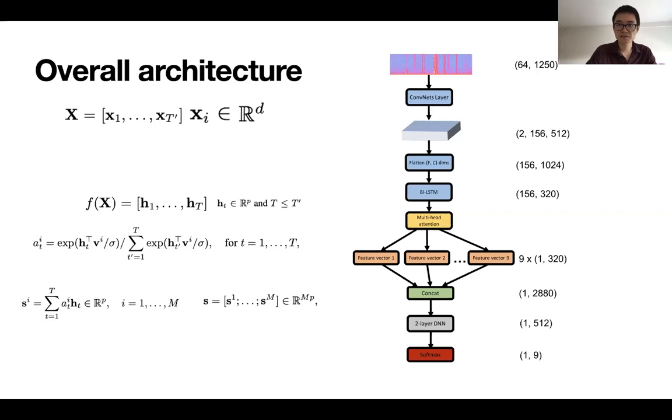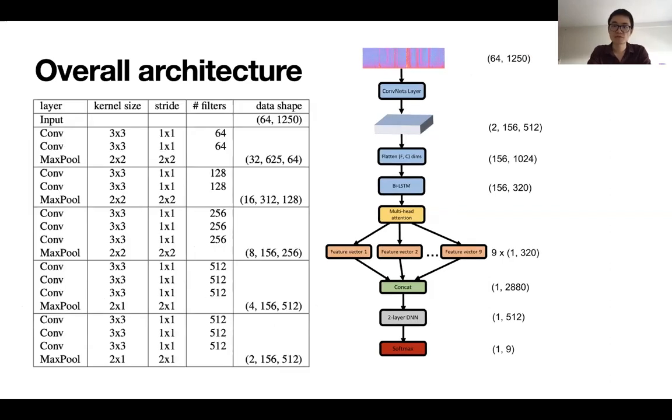So after that, we will be doing a weighted sum for each of the ht using the calculated attention has. So eventually for each attention head we'll be getting one fixed dimensional vector SI that has the same size of the original ht. And if we have M attention heads we'll have M SI. So eventually we can concatenate all of them together and pass it to a two layer, which is the last two layers on the right side of the diagram. So eventually the final output will be dimension size of nine, representing nine classes, through a softmax operation. And the overall network will be optimized using a cross entropy loss in an end-to-end fashion.